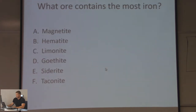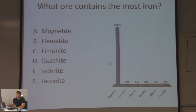What ore contains the most iron? Magnetite, hematite, limonite, gothite, siderite, or taconite? 100% of you got it correct. Magnetite has the most ore. I just realized it's a lot of pressure on me — if I get one wrong, you're going to know I didn't know the answer. Magnetite.